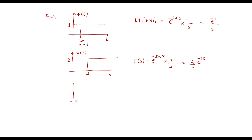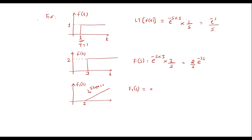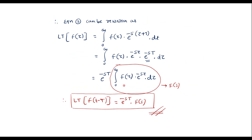Similarly, I can apply this to a shifted ramp signal. Suppose we have a ramp signal with slope equal to 1 that begins at t equal to 2. The Laplace transform is e to the power minus 2s into F of s. Since the Laplace transform of the ramp signal is 1 over s squared, the result is e to the power minus 2s divided by s squared. This is how we can make use of the shifting theorem to find the Laplace transform of shifted signals. Thank you for watching.